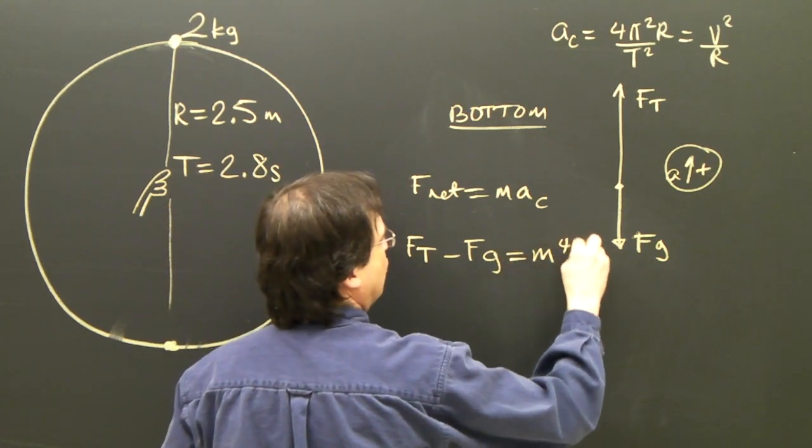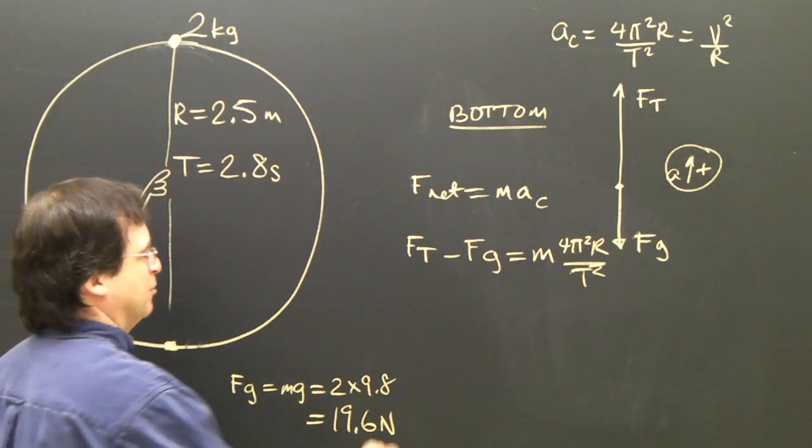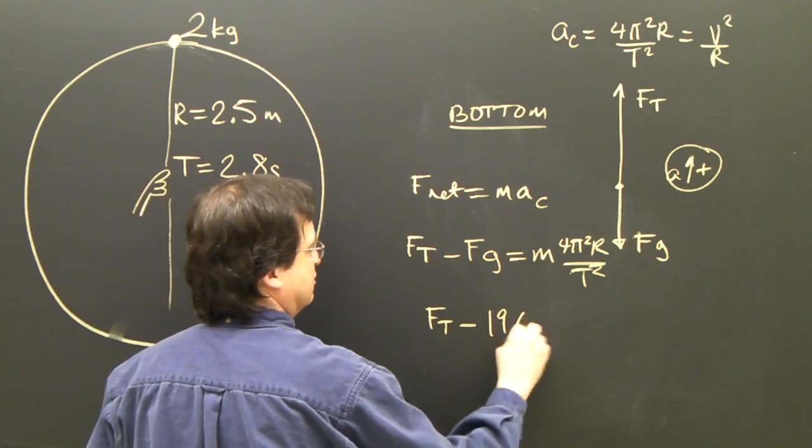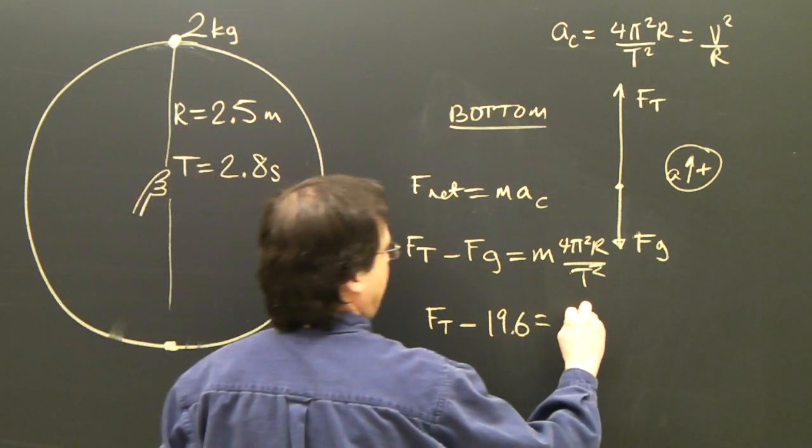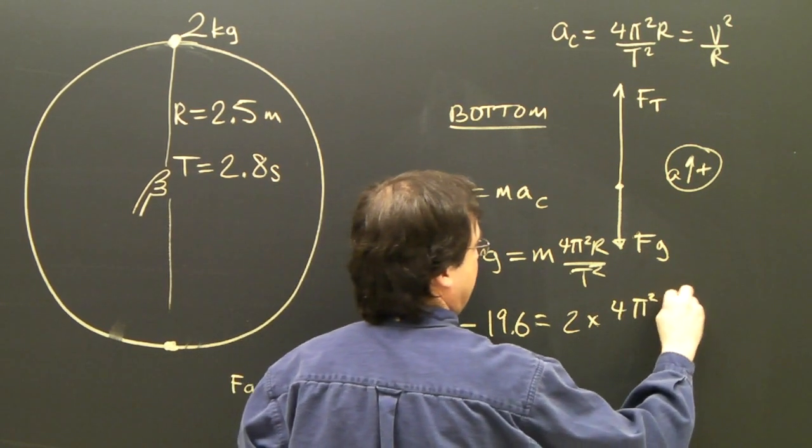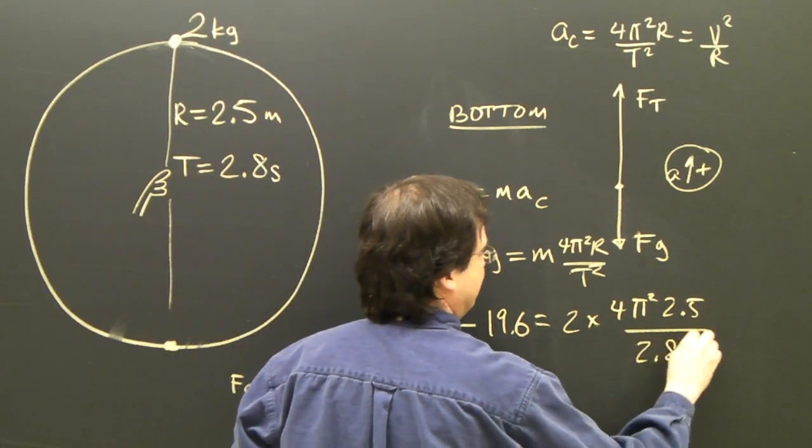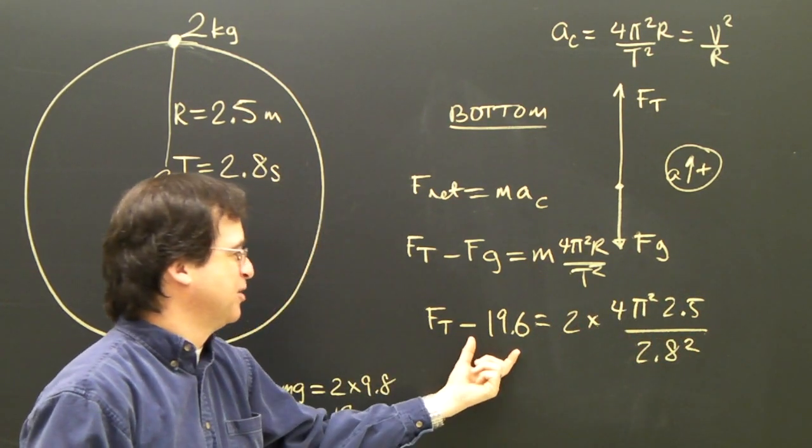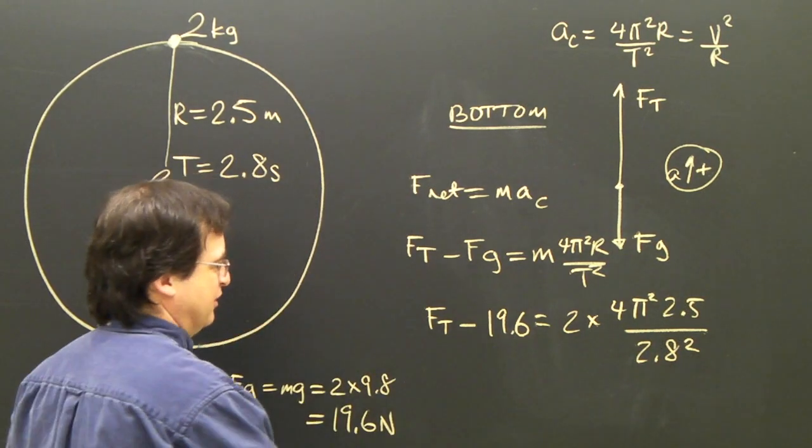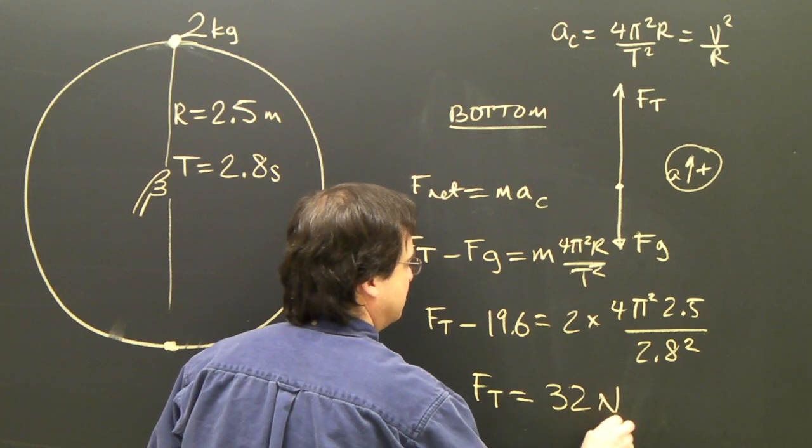And I'm going to use 4 pi squared r over t squared. So I plug in my numbers, ft minus fg, 19.6, equals m, two kilograms, times 4 pi squared, the radius is 2.5, over the period squared. I multiply all this out, I bring the 19.6 onto this side, it's negative over here, so I'm going to add 19.6 to the right. So we'll end up with ft equals 32 newtons.